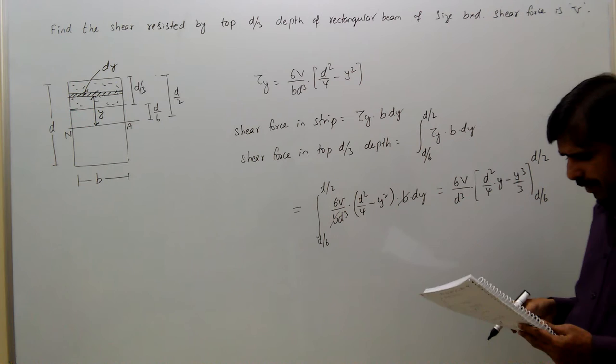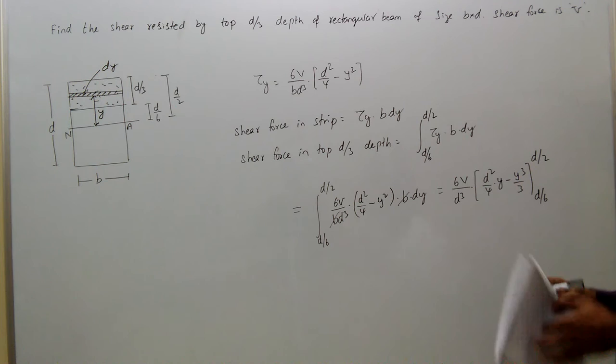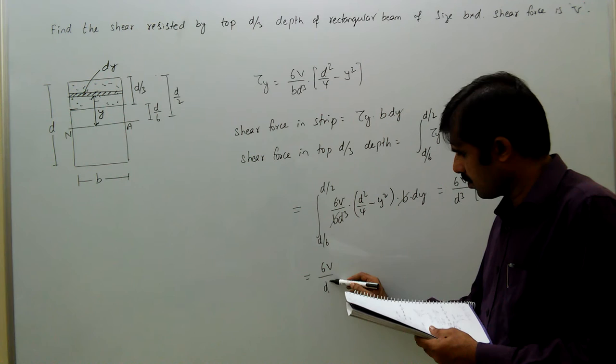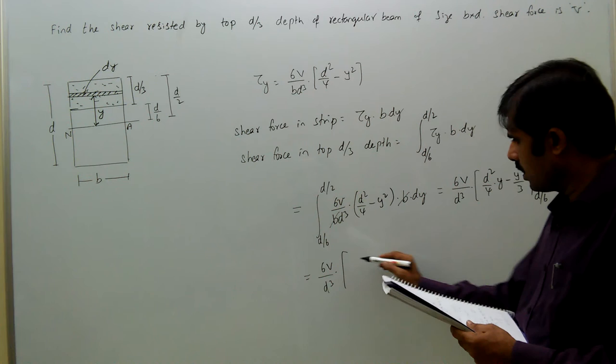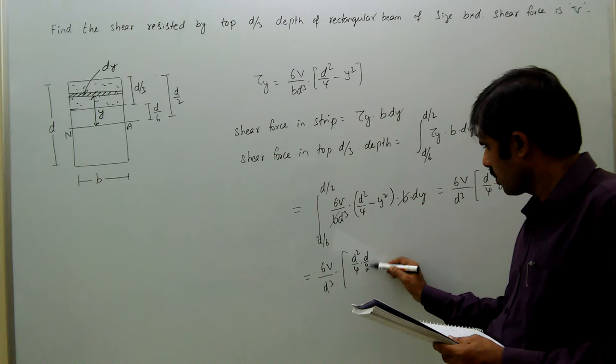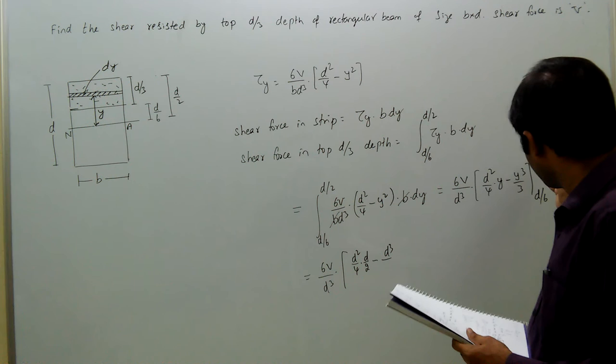Substituting and simplifying, we get d by 6 is equal to 6v by d cube into d square by 4 into d by 2 minus y cube by 3, that is d cube by 8 into 3, 24 minus d by 6.